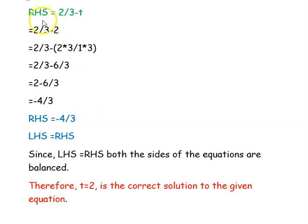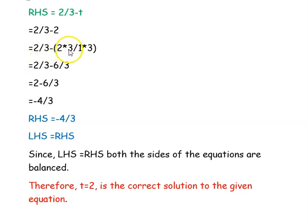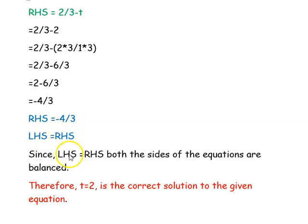Now we check the right-hand side: 2/3 minus t, substituting t equals 2 gives 2/3 minus 2. To subtract we take LCM, multiplying 2 by 3 over 3, giving 2/3 minus 6/3, which equals minus 4 over 3. Our right-hand side is also minus 4 over 3, so left-hand side equals right-hand side. Since both sides are equal, the equation is balanced and t equal to 2 is the correct solution.